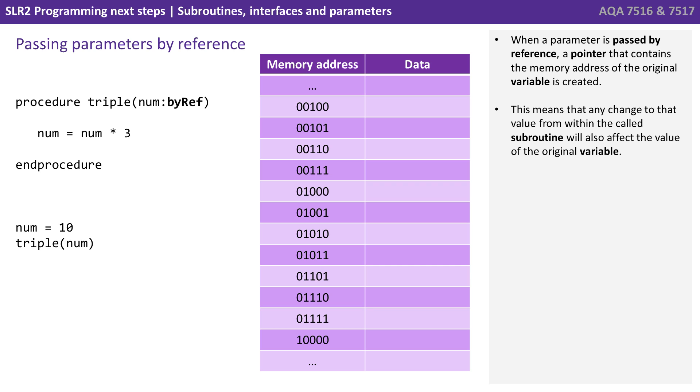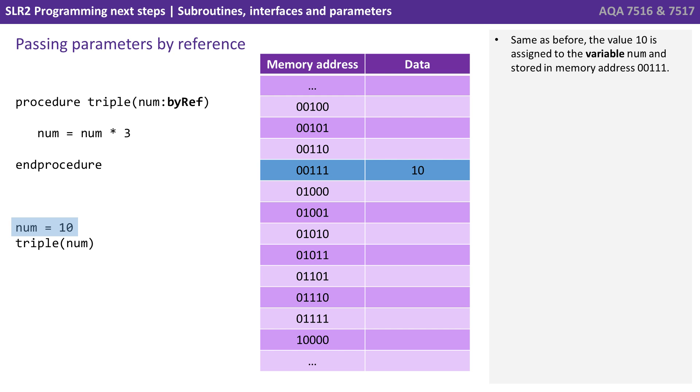Now when a parameter is passed by reference, a pointer that contains the memory address of the original variable is created. This now means that any change to that value from within the called subroutine will also affect the value of the original variable. So same as before, the value 10 is assigned to the variable num, and stored in memory address 00111.